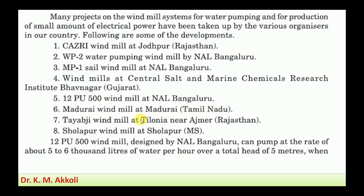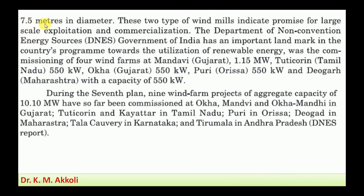Further projects include the Madurai Windmill at Madurai, Tamil Nadu; the Tayabji Windmill at Telonia near Ajmer, Rajasthan; and the Solapur Windmill at Solapur, Maharashtra. The Tolpu 500 Windmill, designed by NAL Bengaluru, can pump at a rate of five to six thousand liters of water per hour for a total head of five meters, using a wind turbine of 7.5 meters diameter. These windmills show promise for large-scale exploitation and commercialization of wind energy.